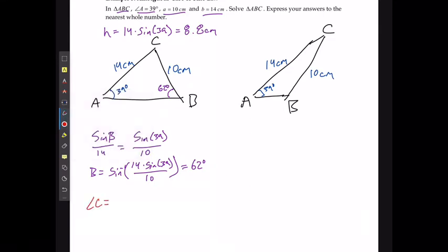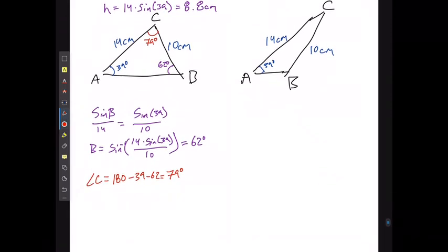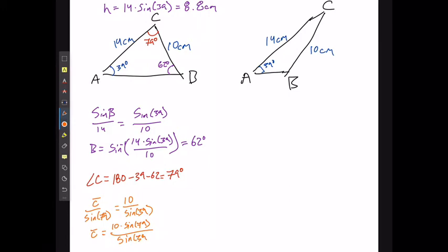Angle C is going to equal 180 minus 39 minus 62, or 79 degrees. And side length C divided by sine of 79 is going to equal side length A divided by sine of 39, which means that side length C is going to equal 10 times sine of 79 divided by sine of 39, or 16 centimeters.